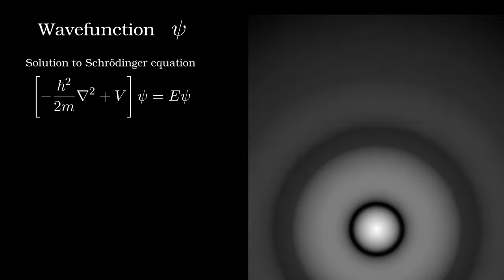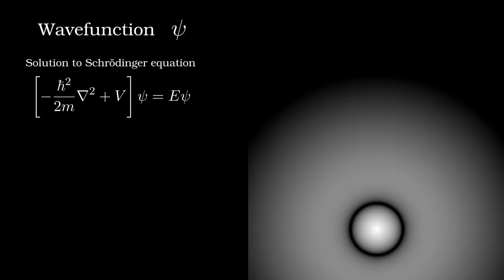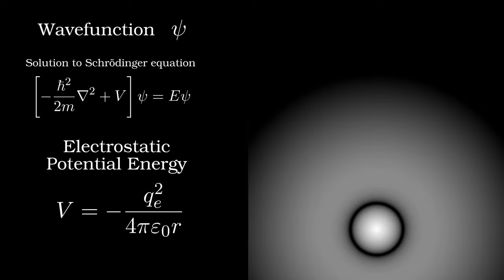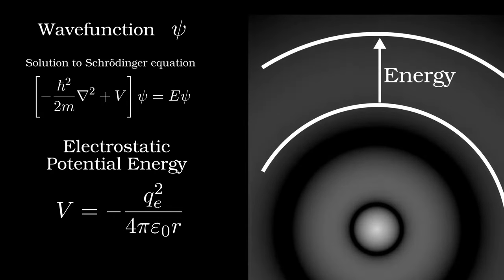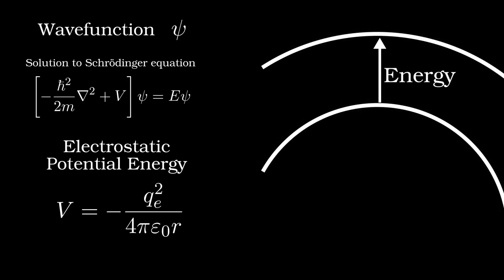Electrons orbiting an atomic nucleus are different in that they are governed by quantum mechanics. An electron can take one of a number of specific, or quantized, orbits, more accurately called quantum states. For an electron in a given state, the position is no longer defined with certainty, but rather is probabilistic in nature. The energy, however, is fixed. Just as with the planets, the states where the electrons orbit closer to the nucleus on average have lower energies. So in short, electron energies can take only precise, quantized values and nothing in between.